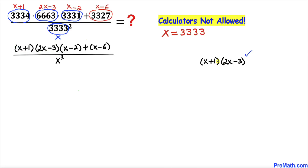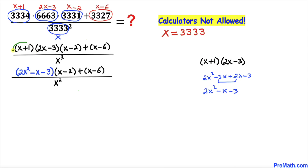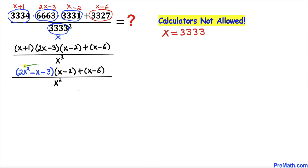Let's multiply them using double distribution. That gives us 2x squared minus 3x plus 2x minus 3. Combining like terms, that gives us 2x squared minus x minus 3. In the next step I have replaced this whole expression with this simplified form, and the rest remains the same.